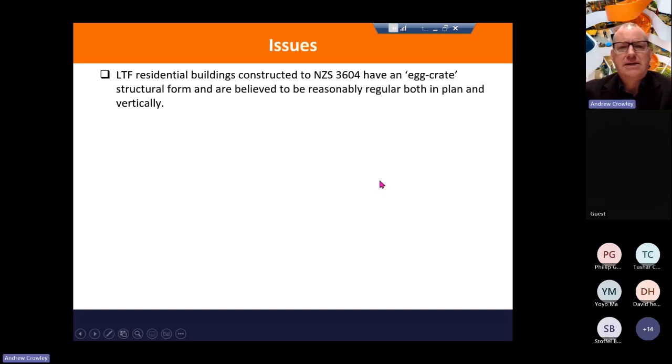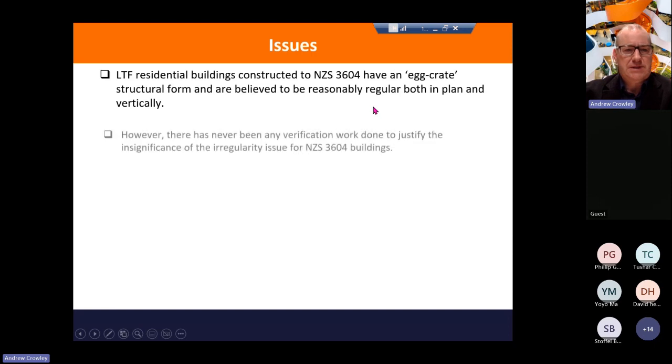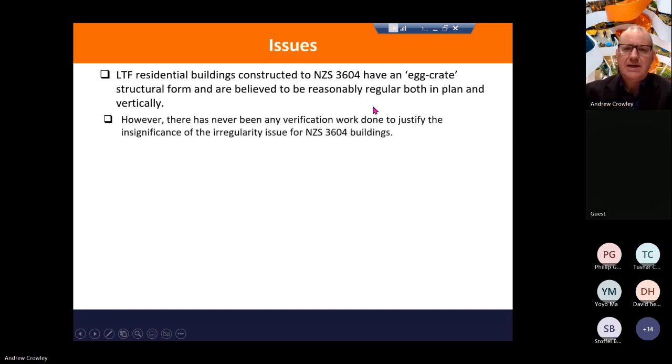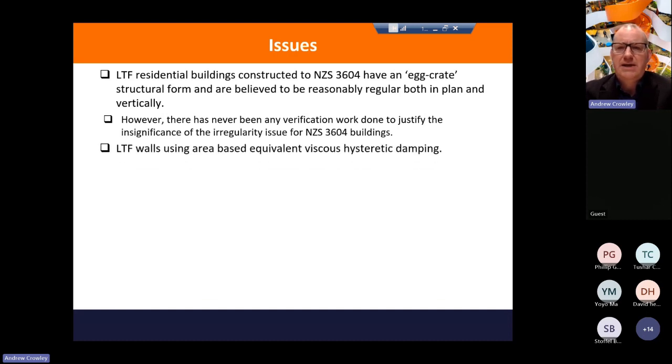However, architects like to push the boundaries of this code. They like to put in large openings for ranch sliders. And so you end up with taking out what potentially could have been good bracing lines. So coming back to the Branz report, she's saying there's very little verification work to justify the insignificance of the irregularity, because a lot of these buildings designed to 3604 are not as regular as they assumed.